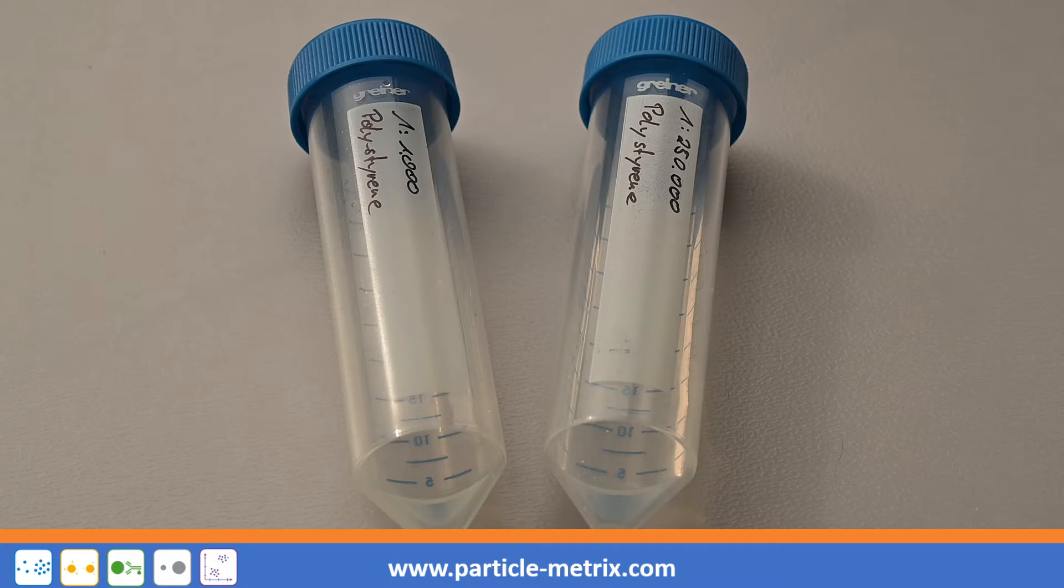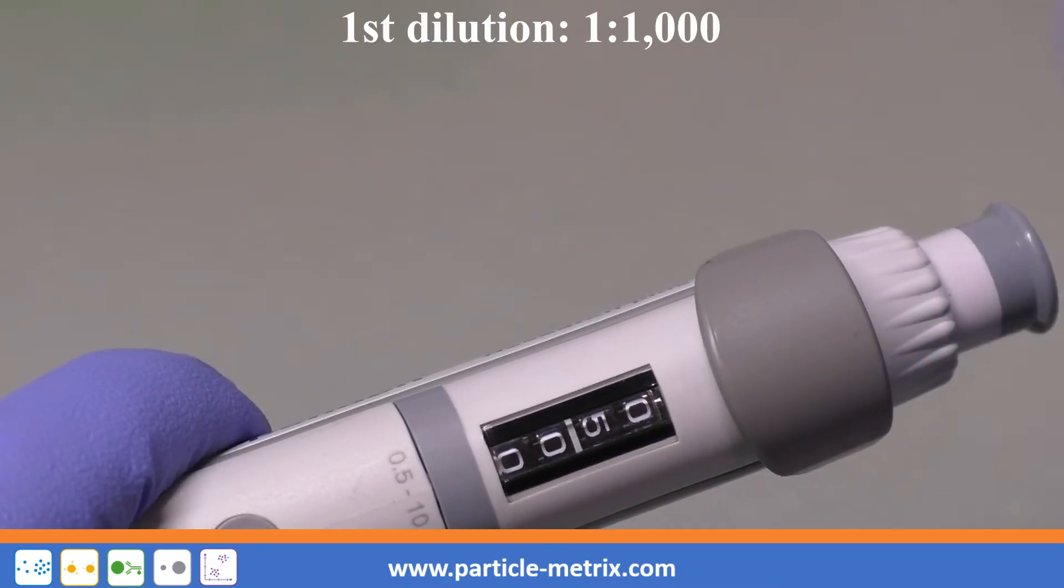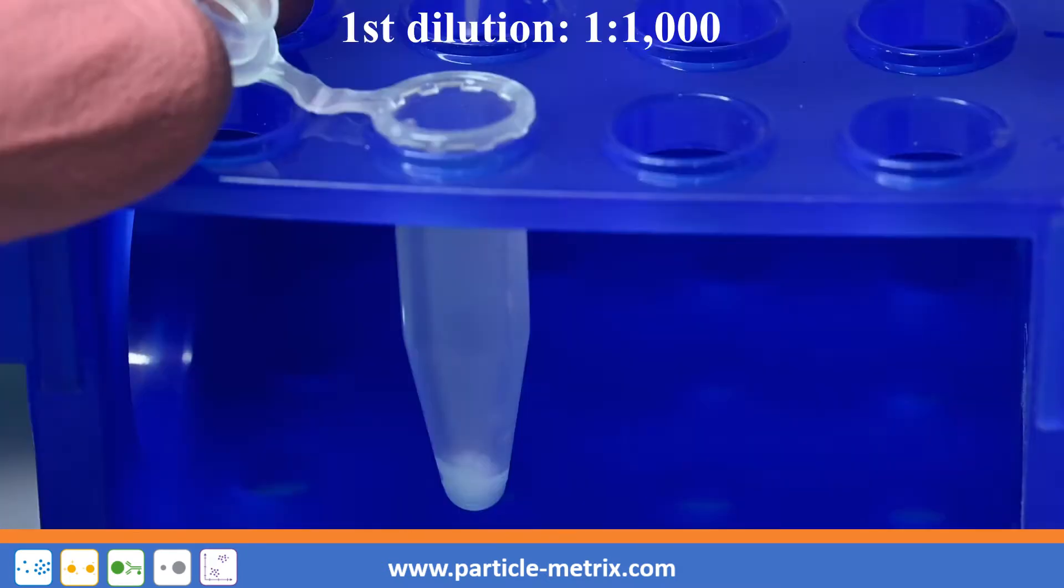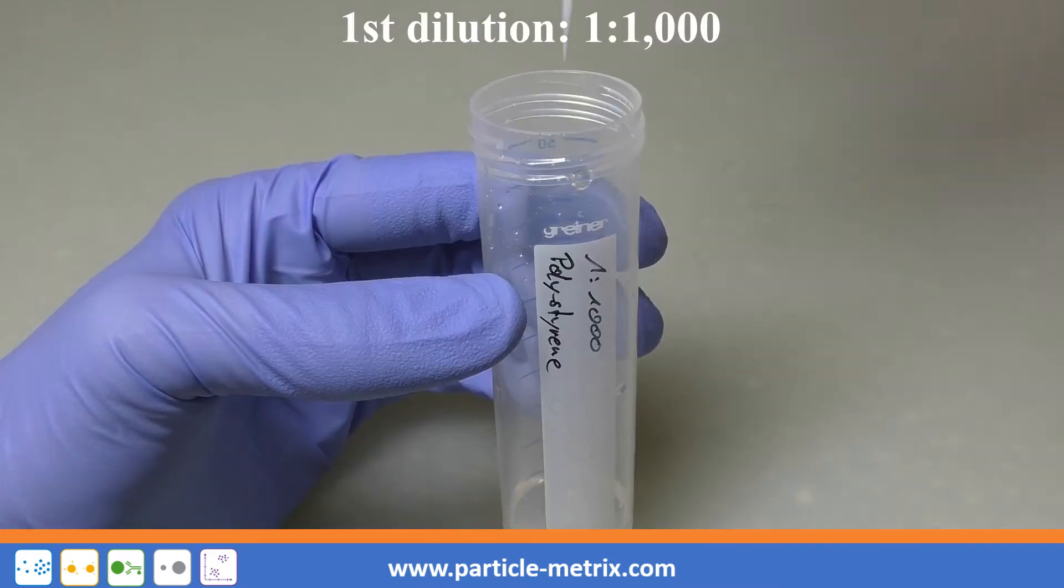The preparation of the alignment suspension requires two separate dilution steps. In the first step, take out 5 µL of the original solution and pipette it into 5 ml of particle-free water.